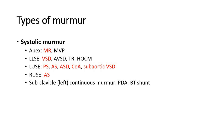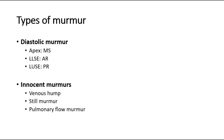If it is heard loudest at the left upper sternal edge, then think of pulmonary stenosis, aortic stenosis, atrial septal defect, coarctation of aorta, and sub-aortic VSD. If it is heard loudest at the right upper sternal edge, then it is probably aortic stenosis. For diastolic murmur: if heard loudest at the apex it will be mitral stenosis, left lower sternal edge is aortic regurgitation, and left upper sternal edge is pulmonary regurgitation.